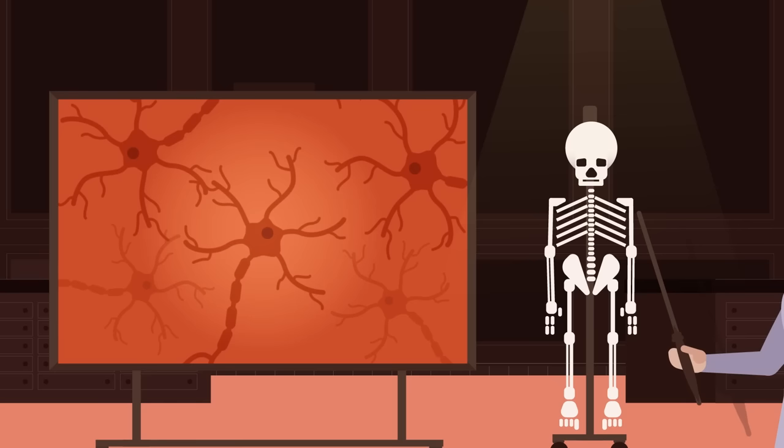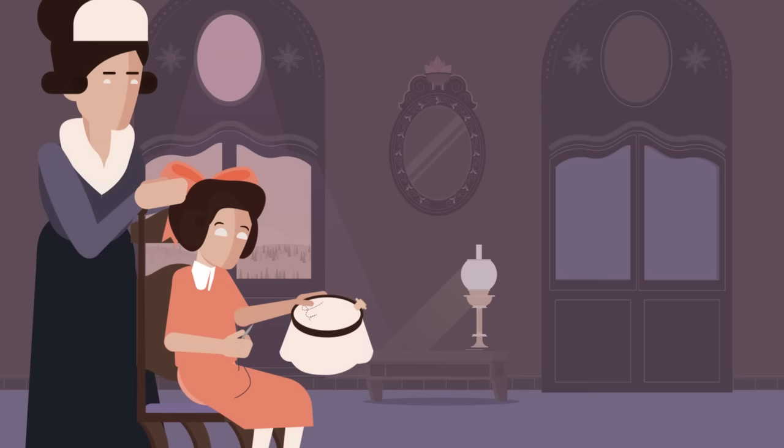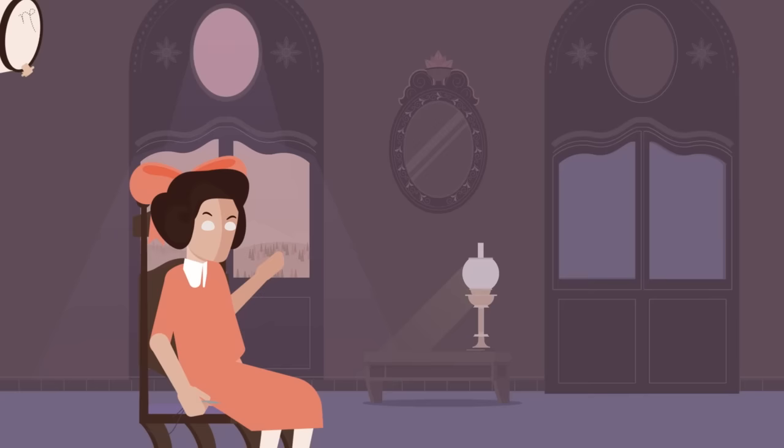Nobody knew until one determined woman found the secret behind this growth. Born in Italy in 1909, Rita Levi-Montalcini was destined to become a housewife like many girls at the time, but when her governess died of stomach cancer, she resolved to become a doctor.